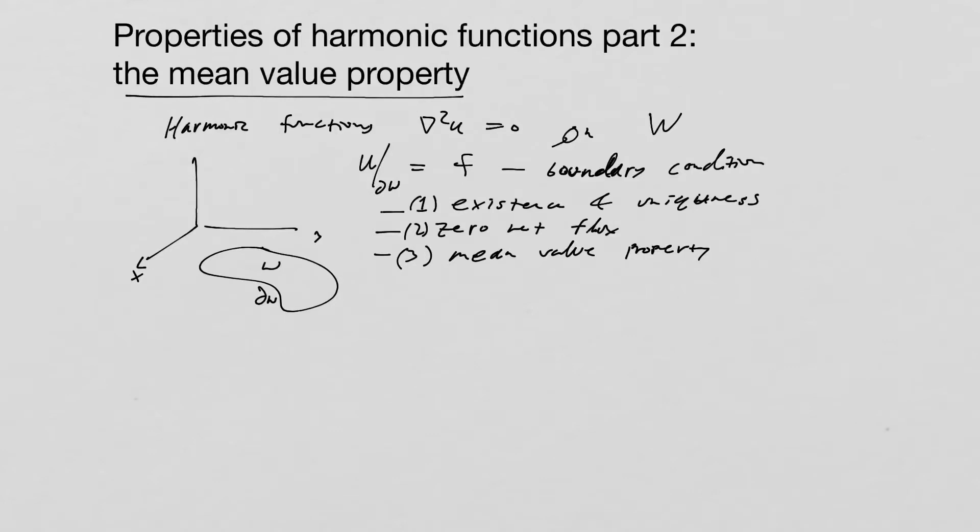The mean value property goes as follows. Take any disk D that's a subset of W with radius little r. Actually, I should change my letters here. I'll say the radius is little r.